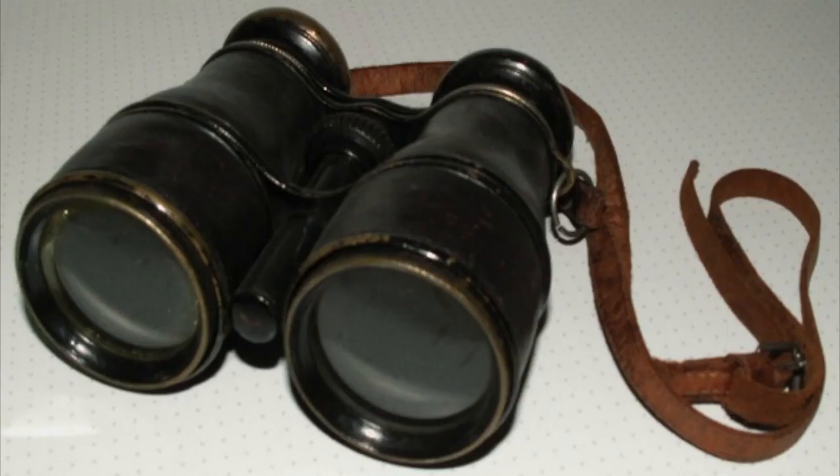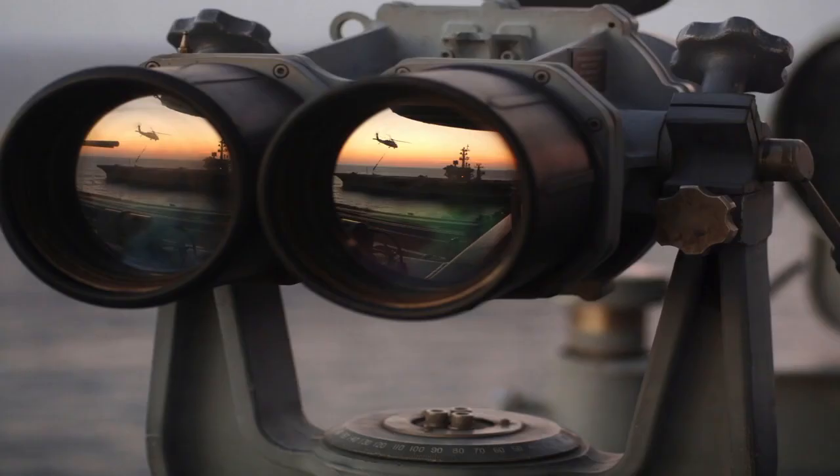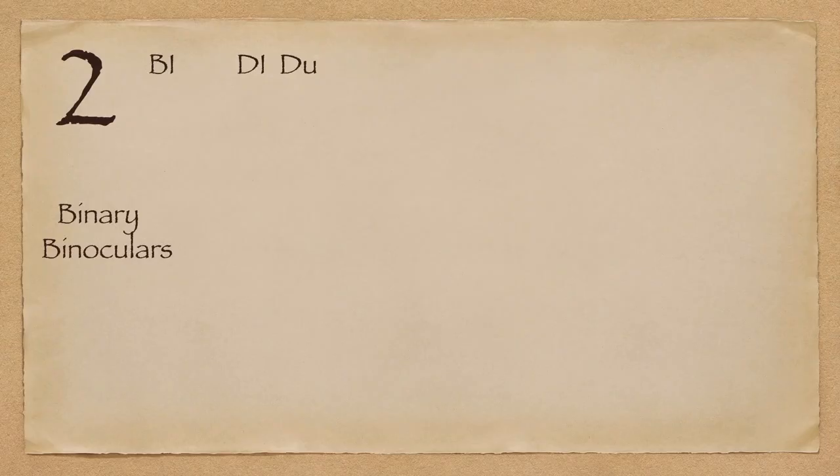Next up is binoculars. In the previous session, we looked at the word monocle. Mono was one and ocule was eye. The same root for eyes is here — ocular or oculus is the root for eye. Bi means two, so binocular is anything that uses two eyes. In common language, binoculars refers to an optical instrument with a lens for each eye used for viewing distant objects, making far-away objects appear nearer.